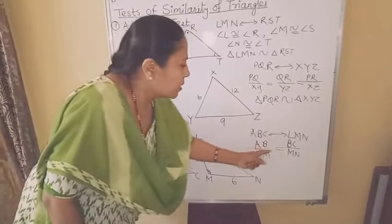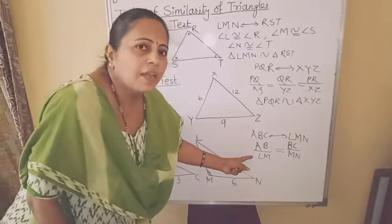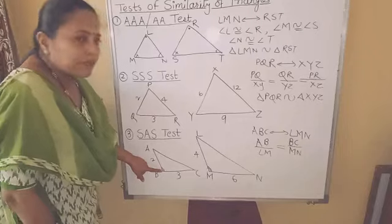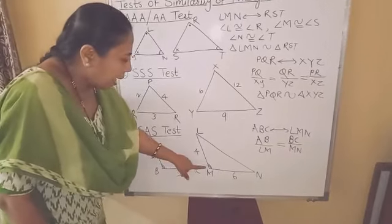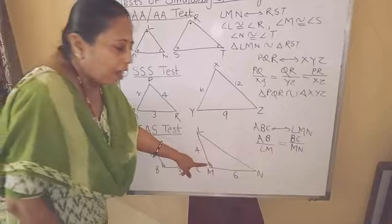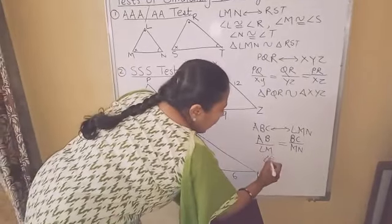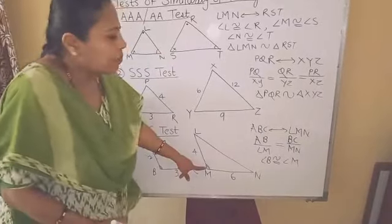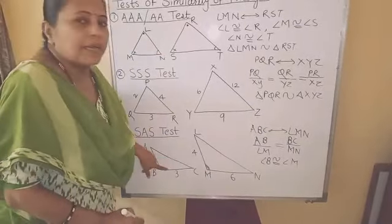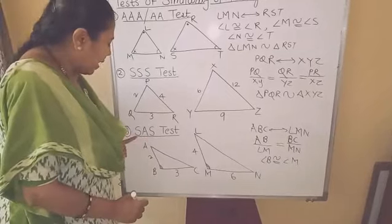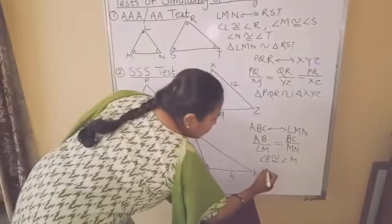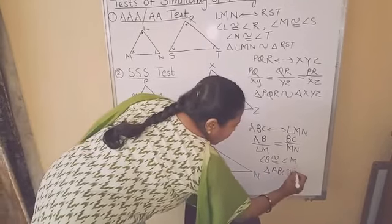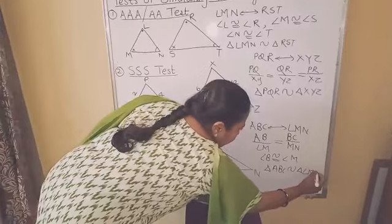And the angle included between these two sides — angle B and angle M — are congruent: angle B is congruent to angle M. Therefore, we can say that these two triangles are similar by the SAS test: triangle ABC is similar to triangle LMN by the SAS test.